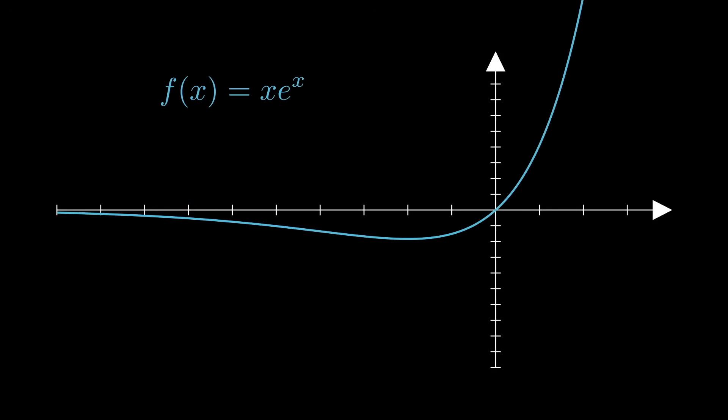You might notice that if you look at the graph of xe to the x, it fails the horizontal line test. That is, it doesn't have a unique inverse unless we're looking at specific intervals. And things get even more complicated if we extend this to the complex plane.